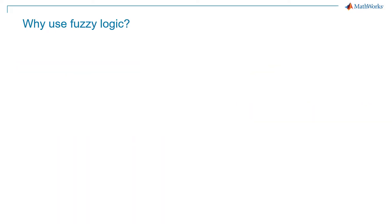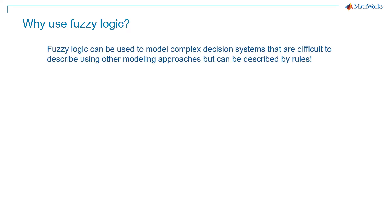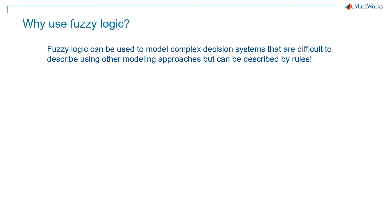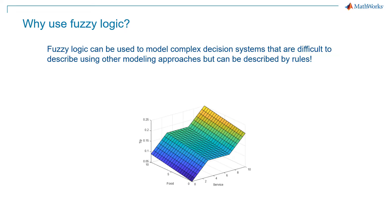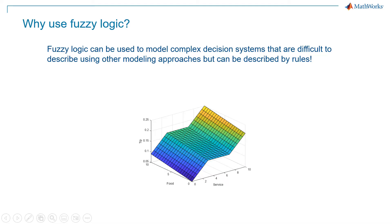In terms of the benefit of using fuzzy logic: fuzzy logic can be extremely beneficial and can be used to model complex decision systems that are difficult to describe using other modeling approaches, but can be described by rules. To demonstrate this, let's take the same tipping problem example, where you want to create a mapping of inputs to outputs like the image on the screen. You can see that you want to provide a generous tip when the quality of service and food is high, and a lower tip when both are bad. The flat area in between shows the average tip percentage at about 15%, which is the average tip percentage in the US. Let's try this using the non-fuzzy approach first and then come to the fuzzy approach.